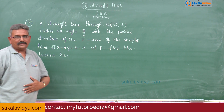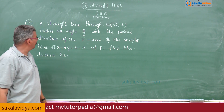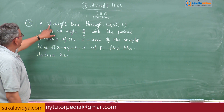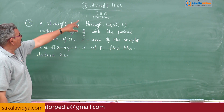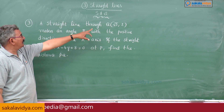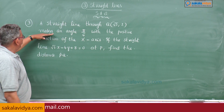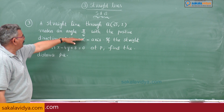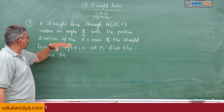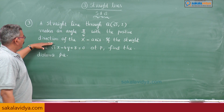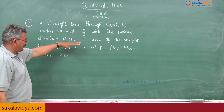Let me repeat the question. A straight line passing through Q(√3, 2) makes an angle π/6 with the positive direction of the x-axis.